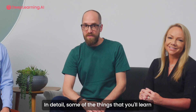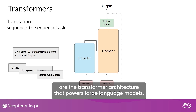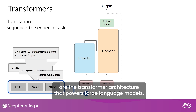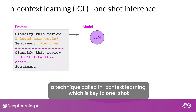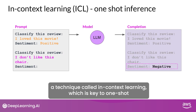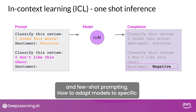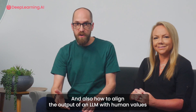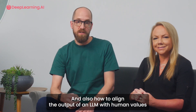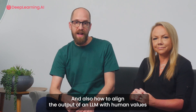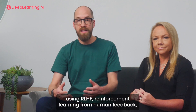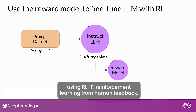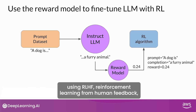In detail, some of the things that you'll learn are the transformer architecture that powers large language models, a technique called in-context learning, which is key to one-shot and few-shot prompting, how to adapt models to specific tasks and datasets, and also how to align the output of an LLM with human values using RLHF, reinforcement learning from human feedback.